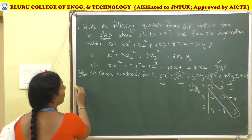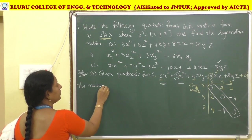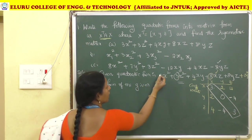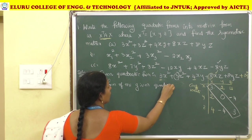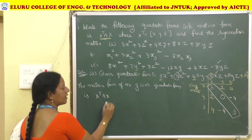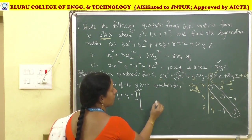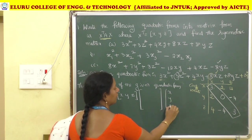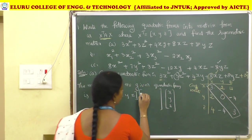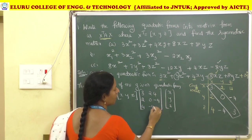So the matrix form of the given quadratic form is X-transpose A X, where A is the 3×3 symmetric matrix: [3, 2, 4; 2, 0, -4; 4, -4, 3].